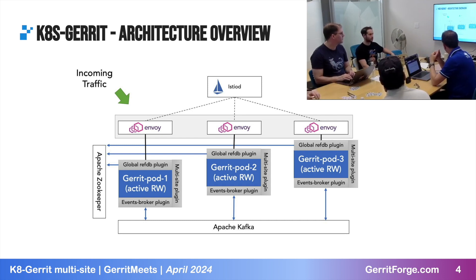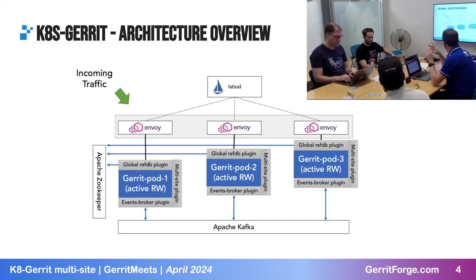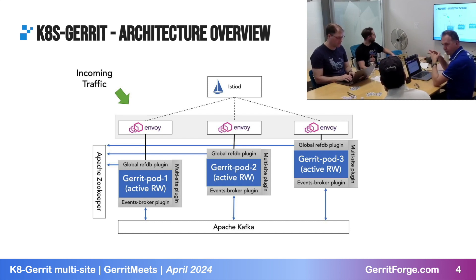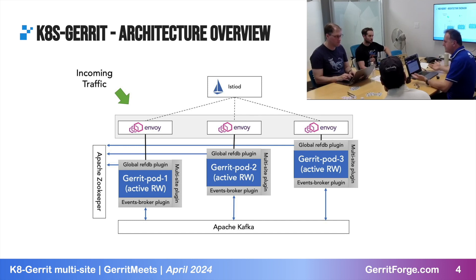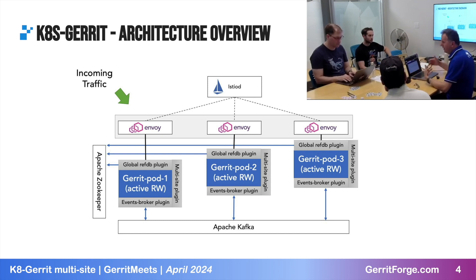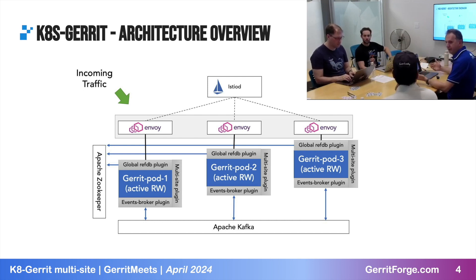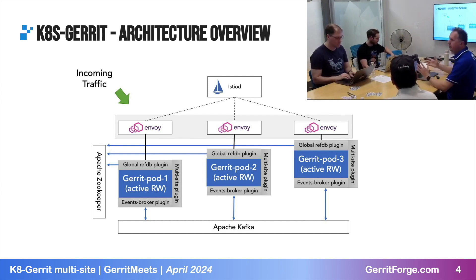We're going to show how Gerrit multi-primary with three pods can be used as a unique service using Istio. Istio is an open source project on Kubernetes that uses Envoy. Envoy is the equivalent of HAProxy — another open source project very popular in Kubernetes — and allows incoming traffic to go and use different pods providing the service. Istio can do a lot of traffic management, rolling upgrades, replaying production traffic to staging, managing stickiness, routing policies, sharding, and more.